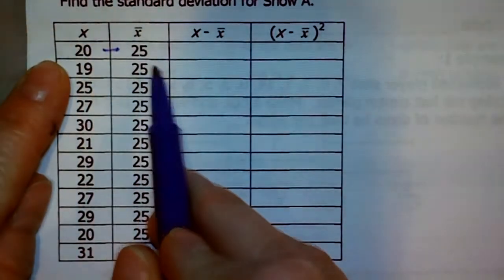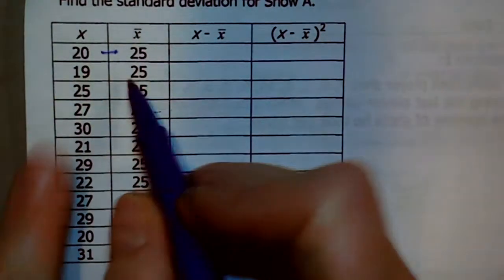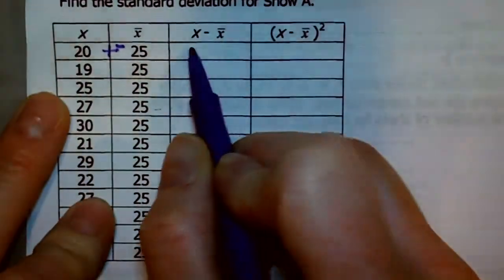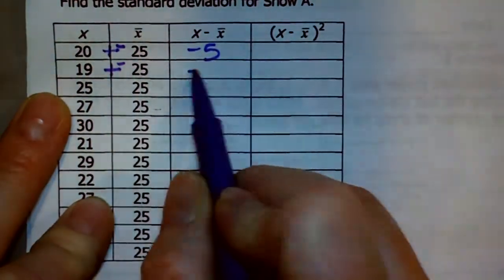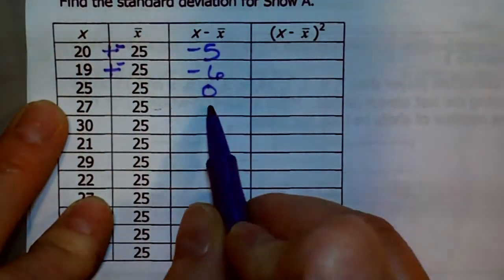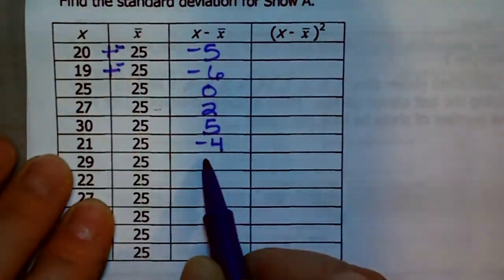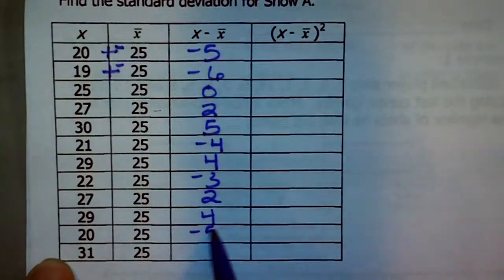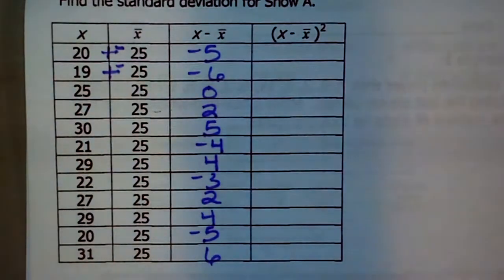We're taking the mean from each value — for example, 20 minus 25 gives negative 5. 19 minus 25 is negative 6. 25 minus 25 is 0. 27 minus 25 is 2. Continue along subtracting and check your values with mine — I make mistakes, everybody makes mistakes. So there we go — we have the result of our subtraction problem.